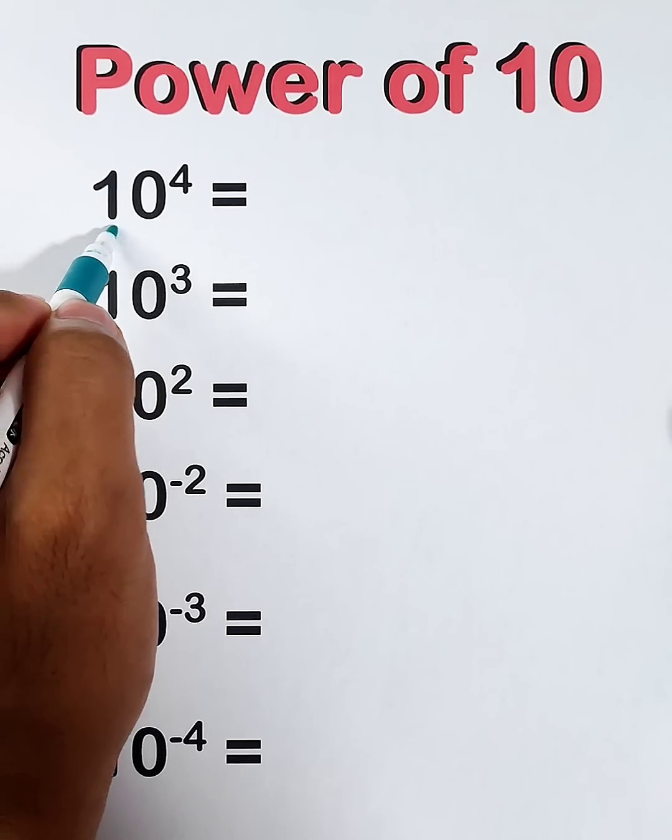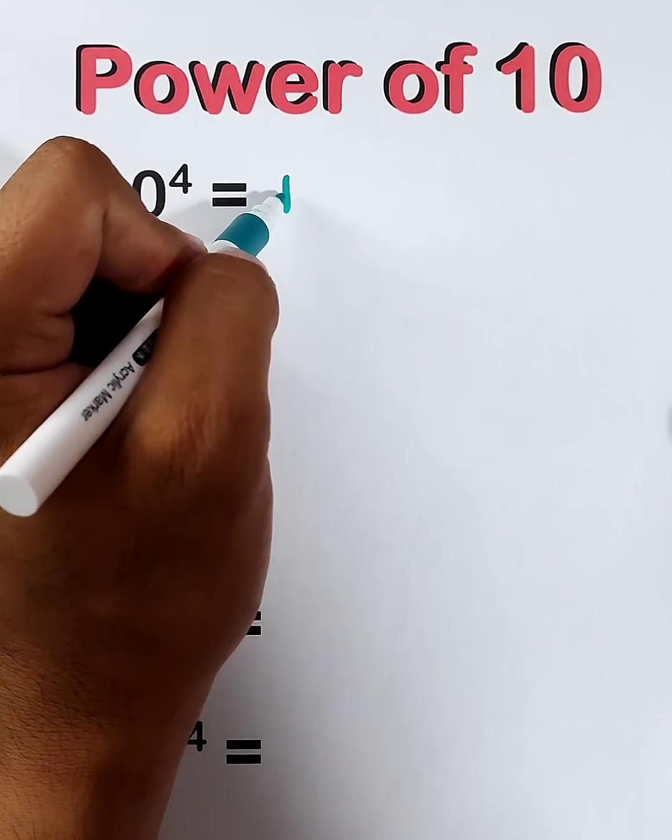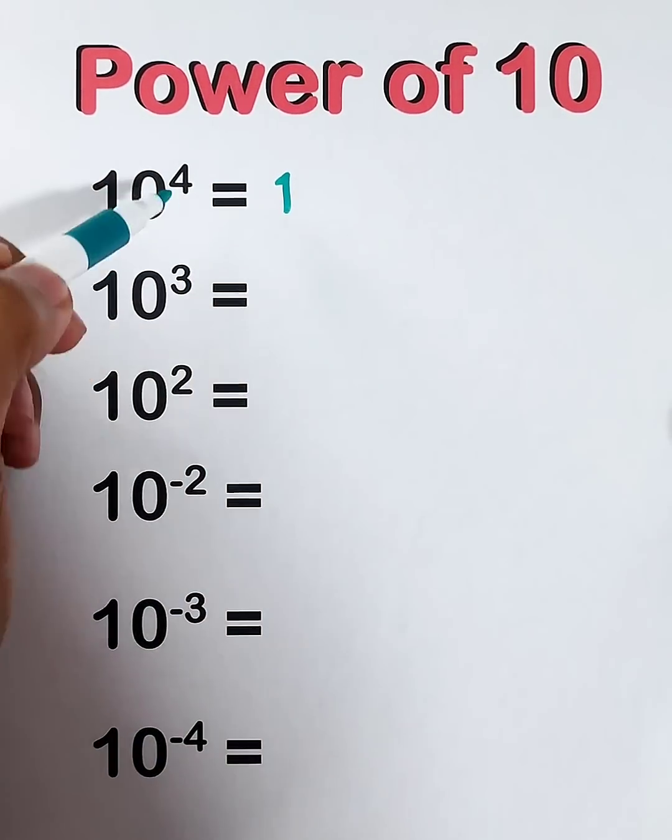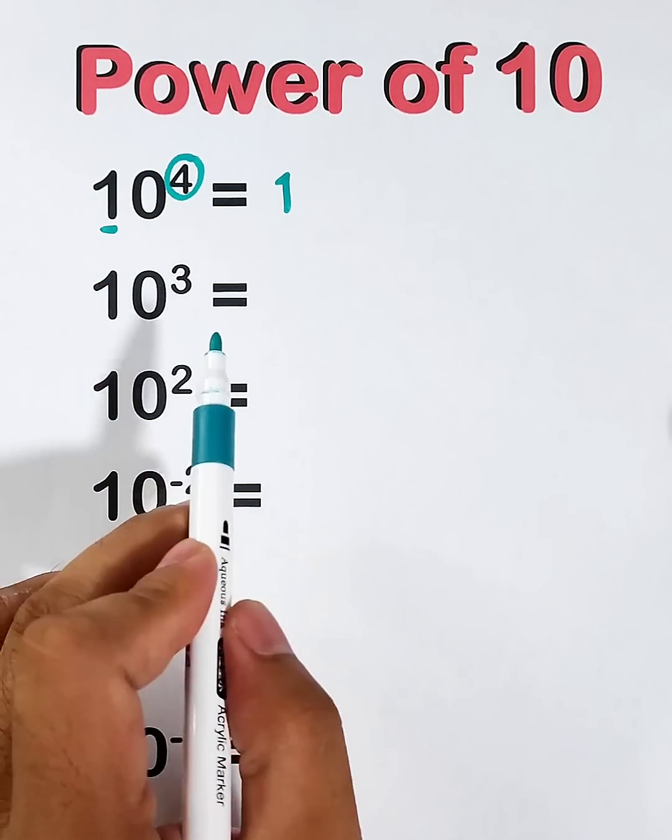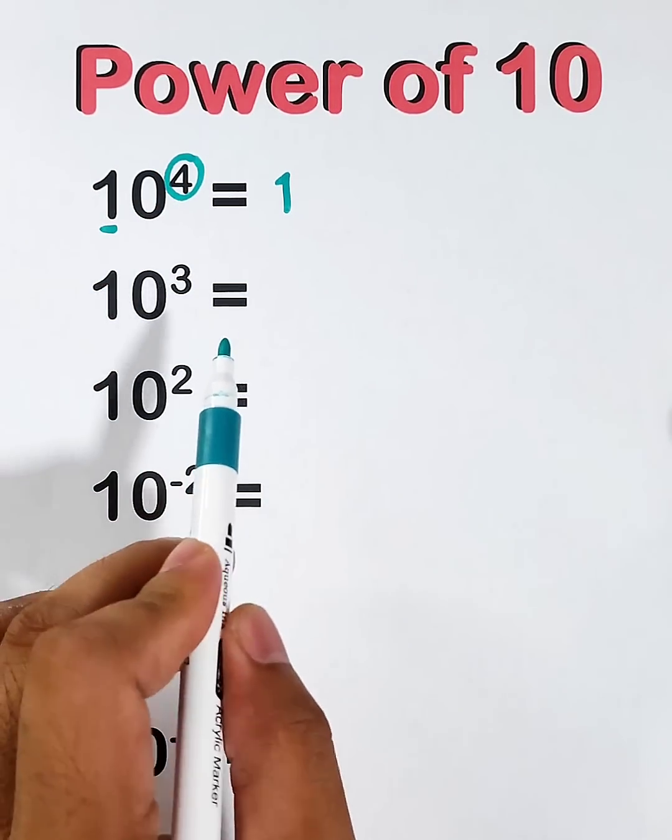First, we need to copy 1 here, and then get the exponent. The number of the exponent is the number of count wherein you need to write 0.